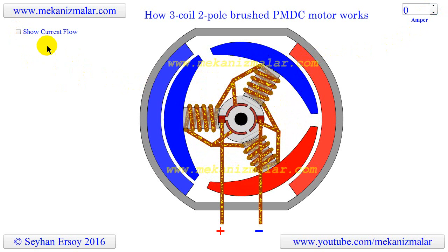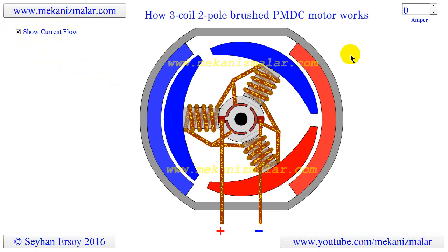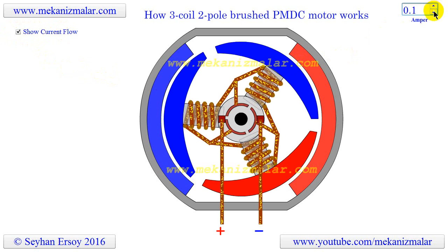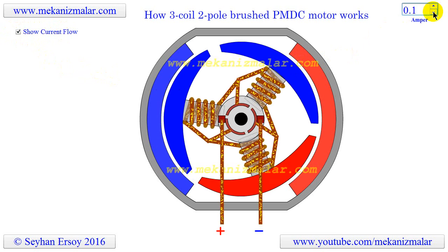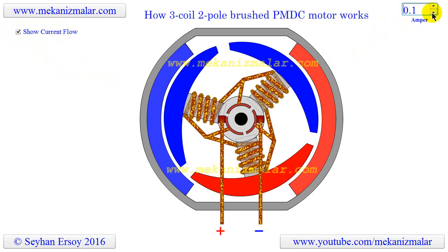To remedy this, I added a 'show the current flow' checkbox to the animation. It creates a condition as if someone is braking the shaft while the current is flowing in the rotor, enabling us to see the current flow when the rotor is standing still.